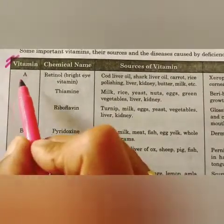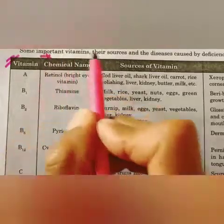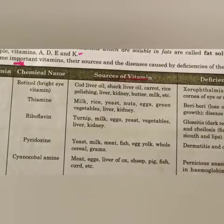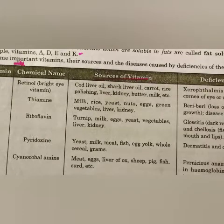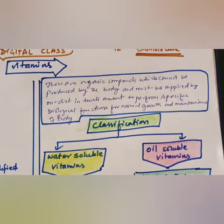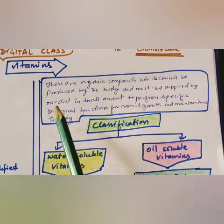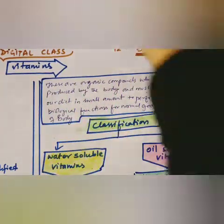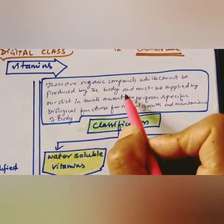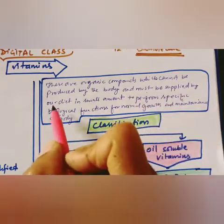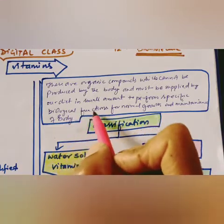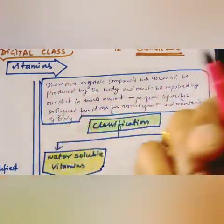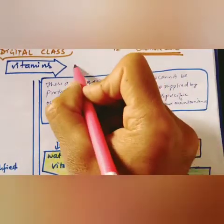A chart of vitamins will show the chemical name, sources, and deficiency diseases for each vitamin — these are common one-mark exam questions. Vitamins are organic compounds that cannot be produced by the body and must be supplied through diet in small amounts to perform specific biological functions for normal growth and maintenance.